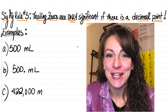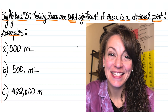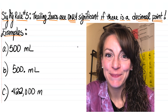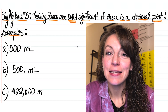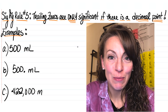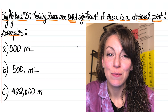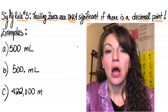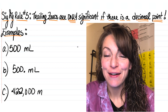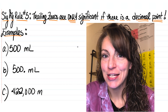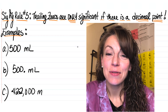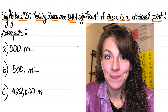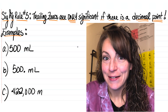Welcome, let's do some chemistry. In this video, what I'd like to discuss is the significant figure rule pertaining to trailing zeros. This particular rule tends to give students the most trouble when trying to determine the number of sig figs a particular measurement has. Trailing zeros by definition are zeros that appear in a measurement after nonzero digits. These types of zeros are only significant if there's a decimal point present in the measurement.